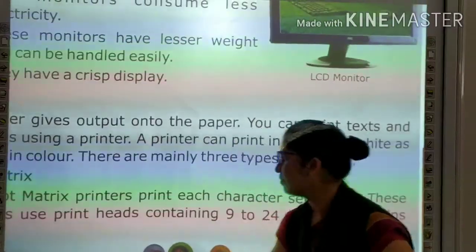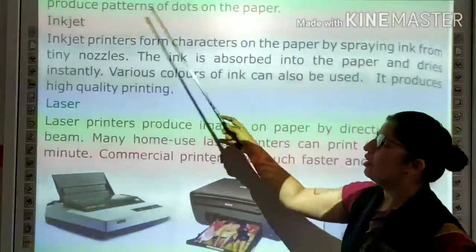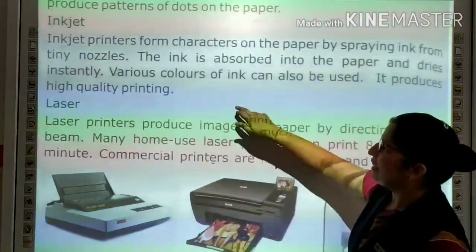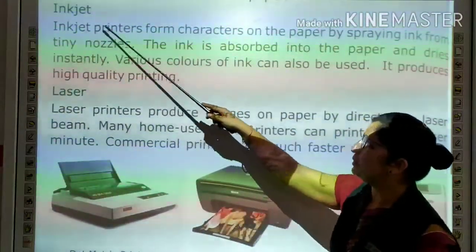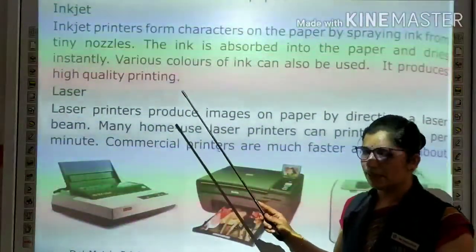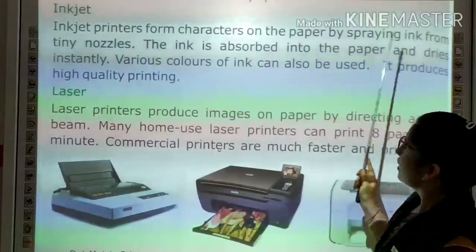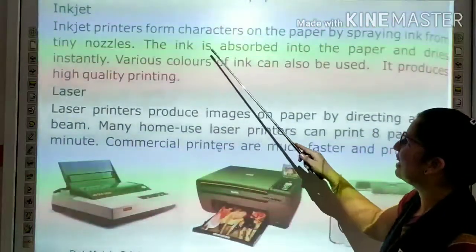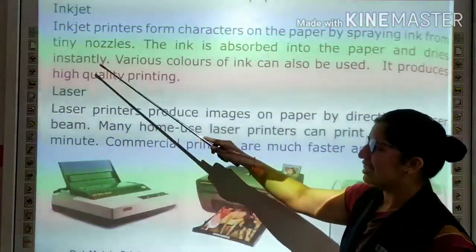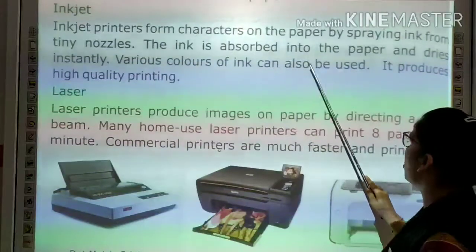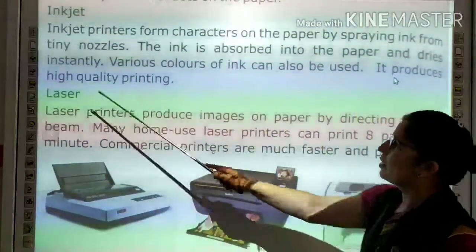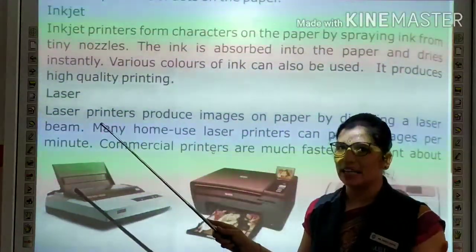These pins produce a pattern of dots on the paper to form text. The second is the inkjet printer, which forms characters on paper by spraying ink from a nozzle. The ink is absorbed into the paper and dries instantly. Various colors of ink can be used and it produces high quality printing.